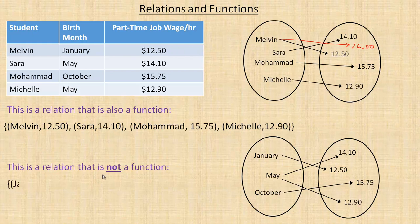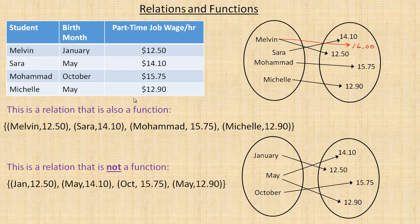Here's an example of another one that's not a function. If we list their birth month and how much they make: January maps to 12.50, May maps to 14.10. But Michelle is also born in May and she makes 12.90. So notice that May is going to two different values, and in ordered pairs we've got May 14.10 and May 12.90. That's not a function because you can't say 'tell me a month and I'll tell you how much they're making' — there are two different wages associated with the month of May.